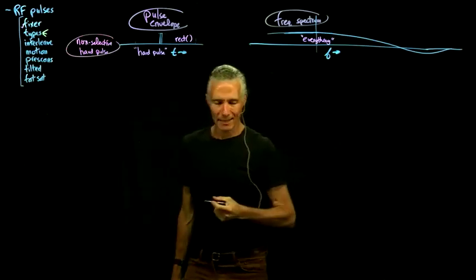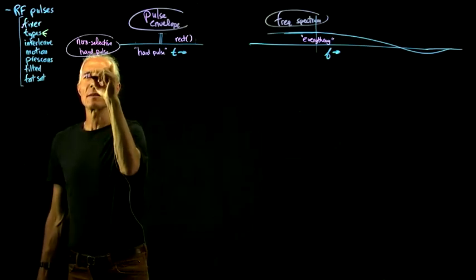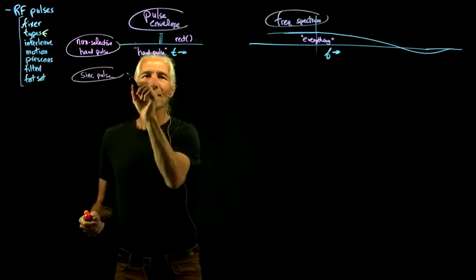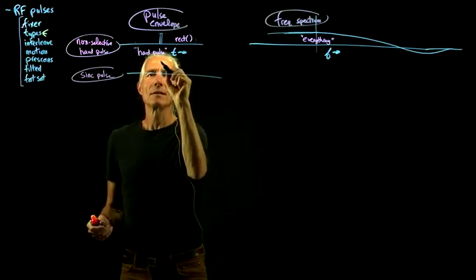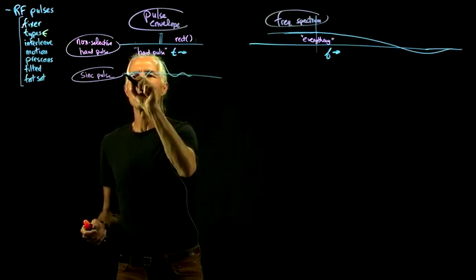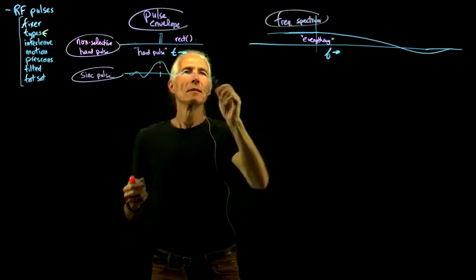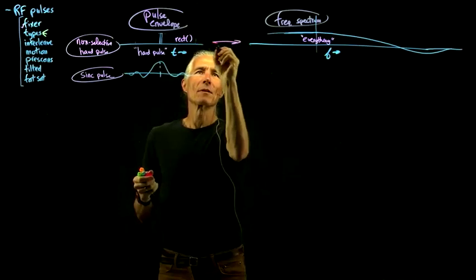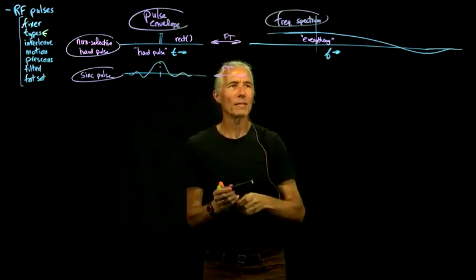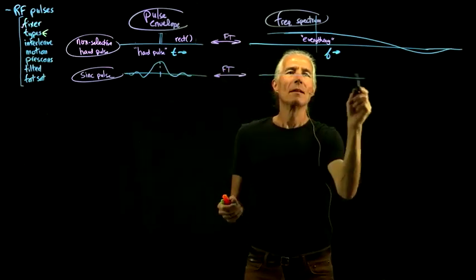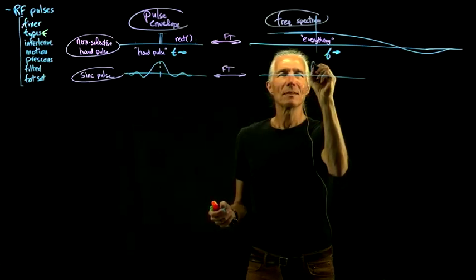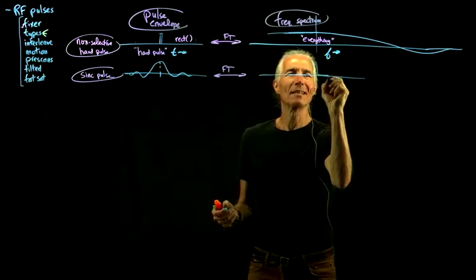But then we might want to do an actual slice, and so that would be called a sinc pulse. In that case we put the sinc on the time side — here's the sinc. And that Fourier transforms into a rect on the other side. So this Fourier transform going back and forth: FT this way, FT going here. In this case that will make a slice for us. It won't be a perfect slice — it'll be sort of like a little smear. Something about like that. So that'll make a slice.